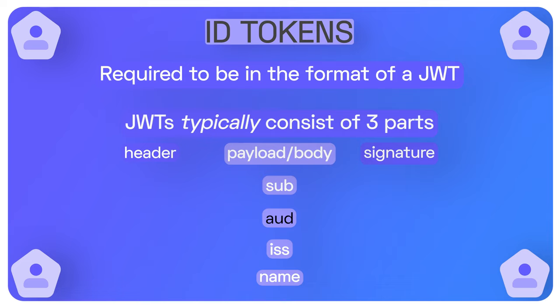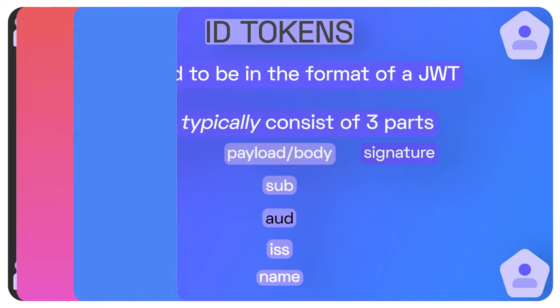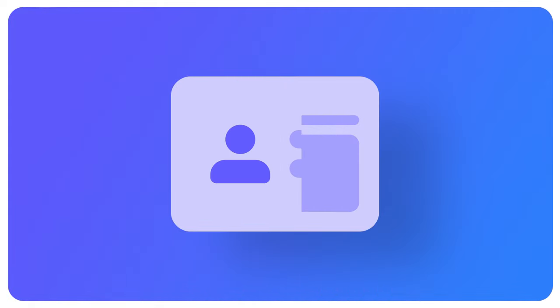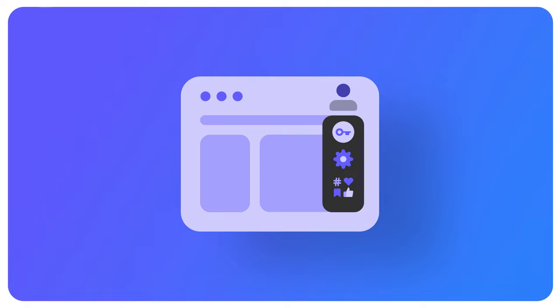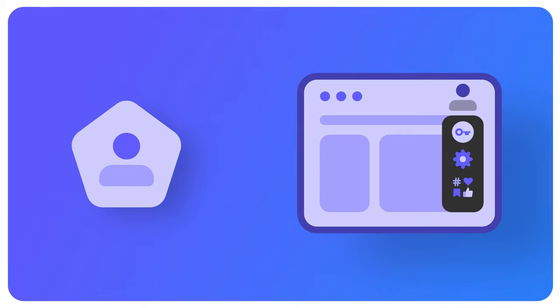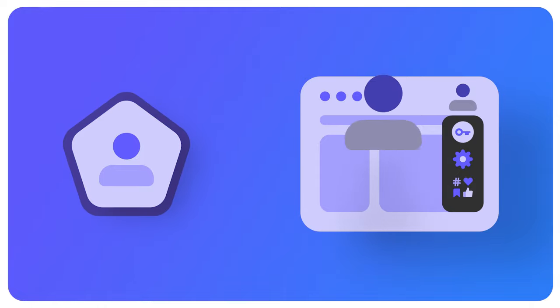The audience property defines which application is meant to be the final recipient of an ID token. In most cases, that's going to be a client application. For example, inside of an application you log in, get redirected back after completing the login, and in the top right corner you might see your username and profile image with a dropdown button — log out, settings, dashboard, and things like that. So that ID token is being used to grab information about the user, like their name and profile image. The intended final recipient is the application the user is currently logged into, and that ID token is used to display their information on the app.